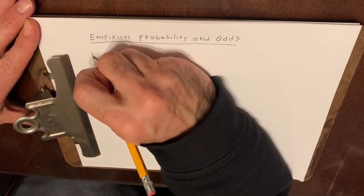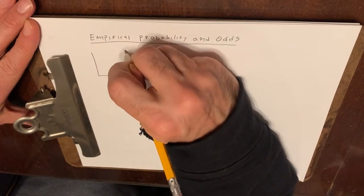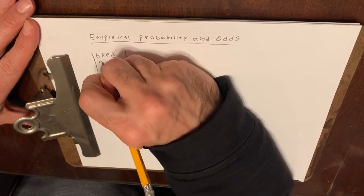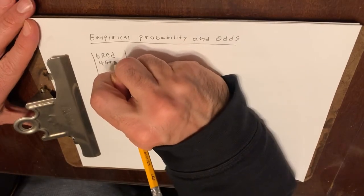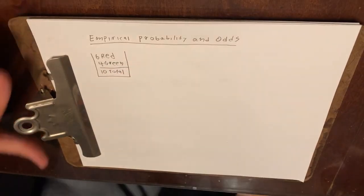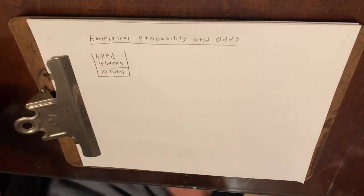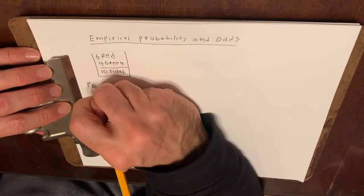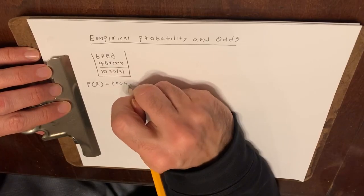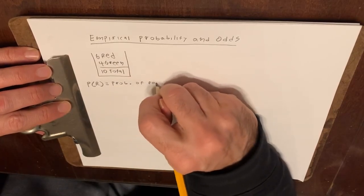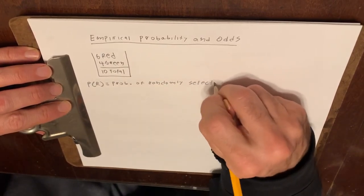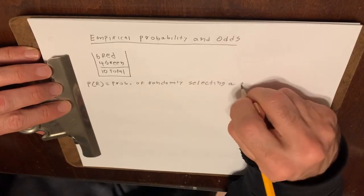And the easiest way to conceptualize this is to think of a jar with, say, six red marbles and four green marbles, which makes a total of ten marbles. And let's let the notation P of R represent the probability of randomly selecting a red marble.